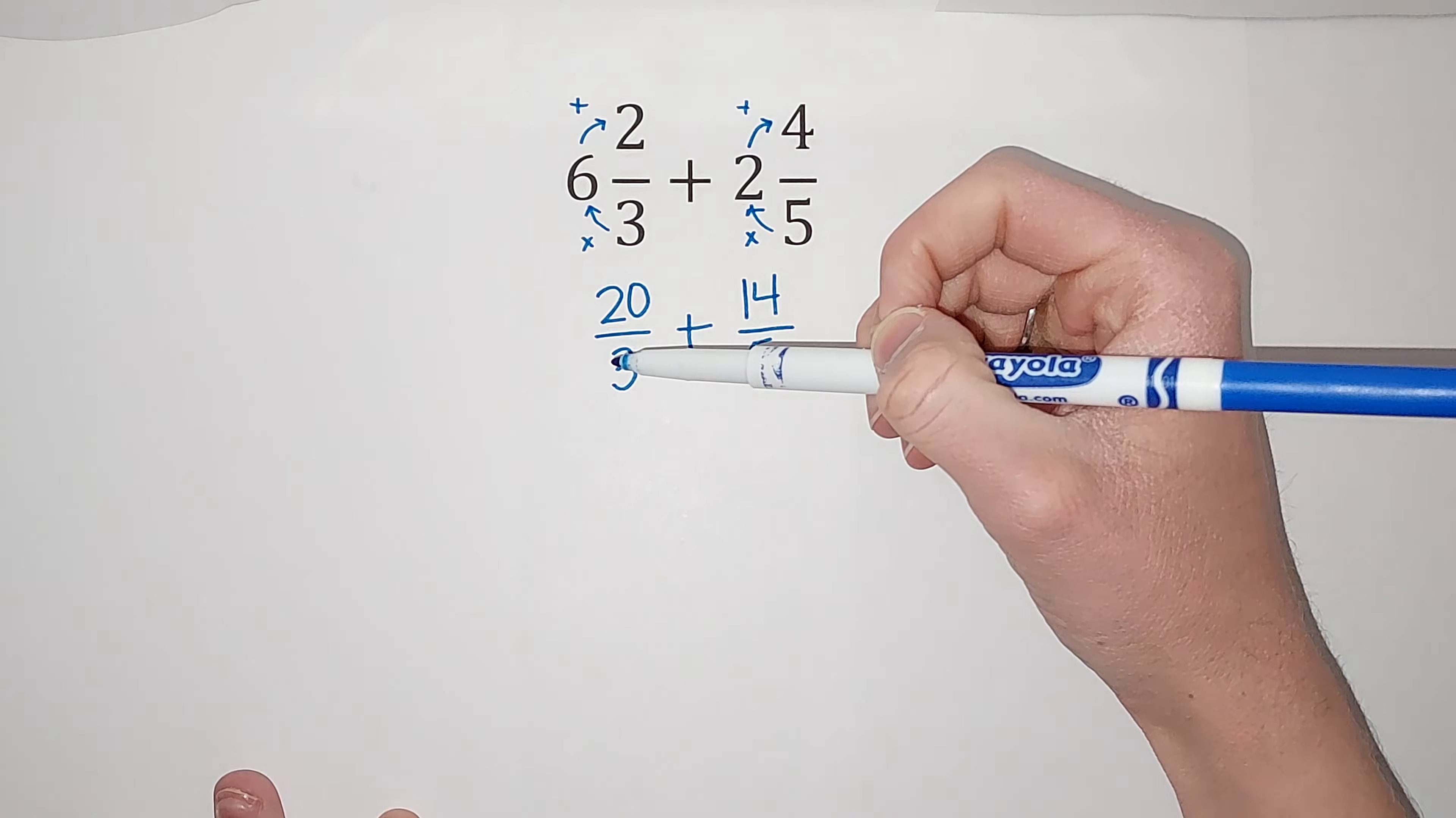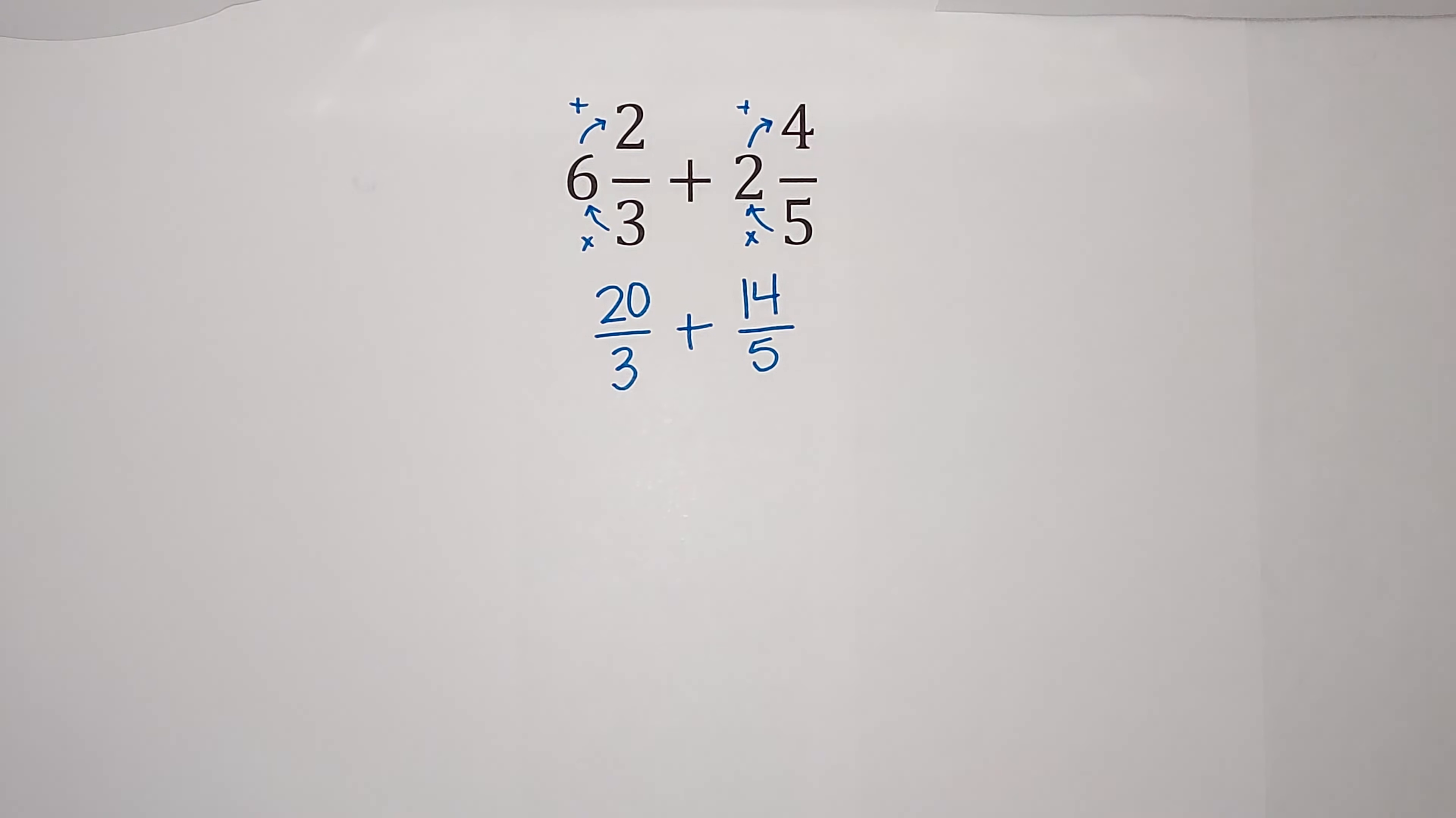So this fraction and this fraction are equal. This fraction and this fraction are equal. They're just a lot easier to work with when they're improper fractions.